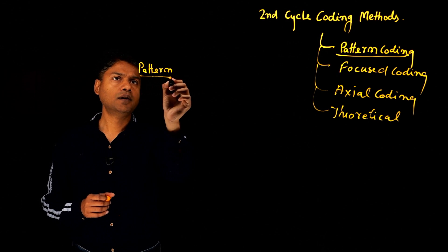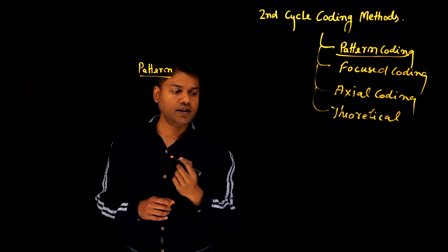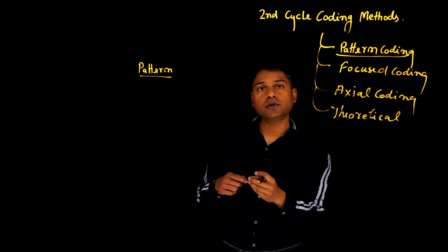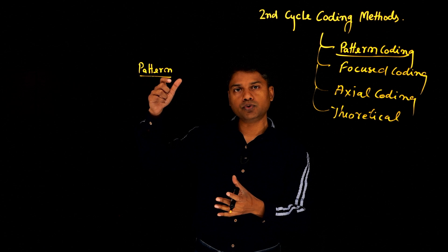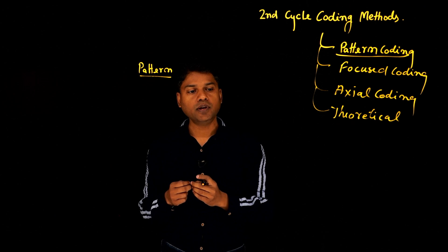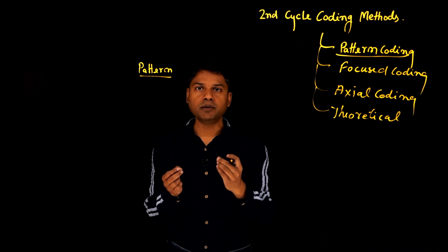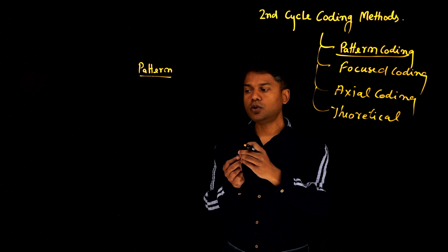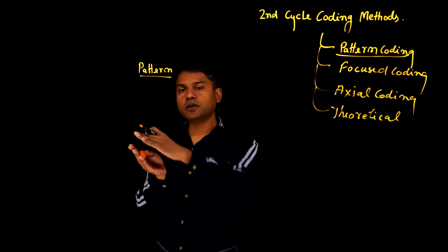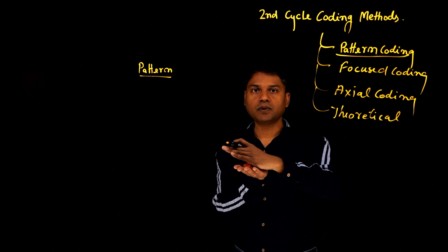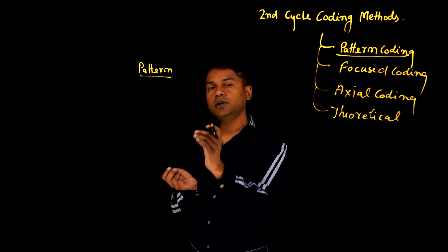So pattern coding is a method which helps us to see how the first cycle of different codes, the initial codes, how they are in some way showing a pattern, maybe related to each other, or there are codes which can be grouped together. So that's what we try to do in pattern coding.